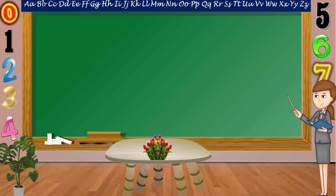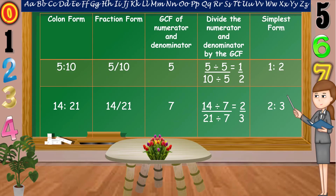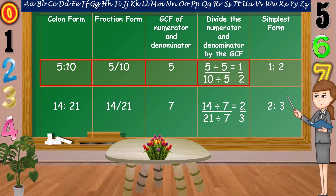To understand better how to simplify or reduce ratios or fractions to their lowest term, let's study some examples. The first example is 5 is to 10, or 5/10. First, we're going to find the GCF of the numerator and denominator. The GCF of 5 and 10 is equal to 5. Then we're going to divide both numerator and denominator by 5. 5 divided by 5 is equal to 1. 10 divided by 5 is equal to 2. Therefore, the simplest form of 5 is to 10 is 1 is to 2.